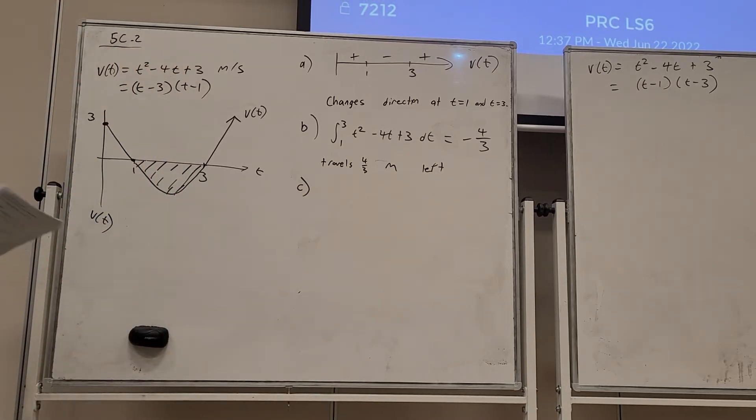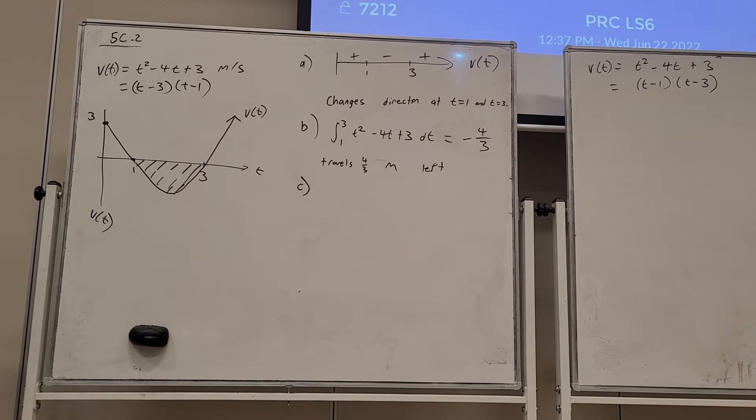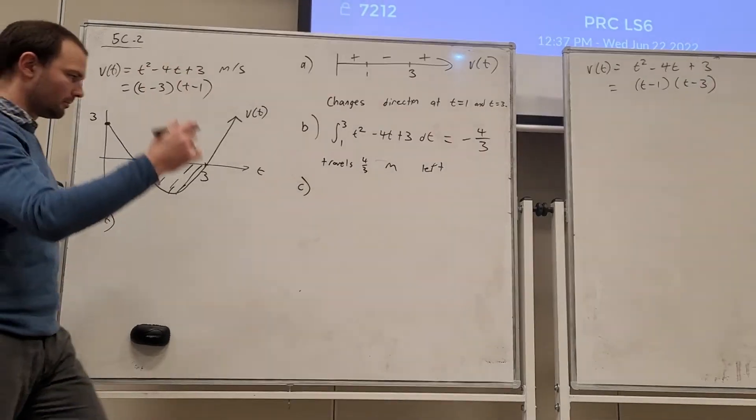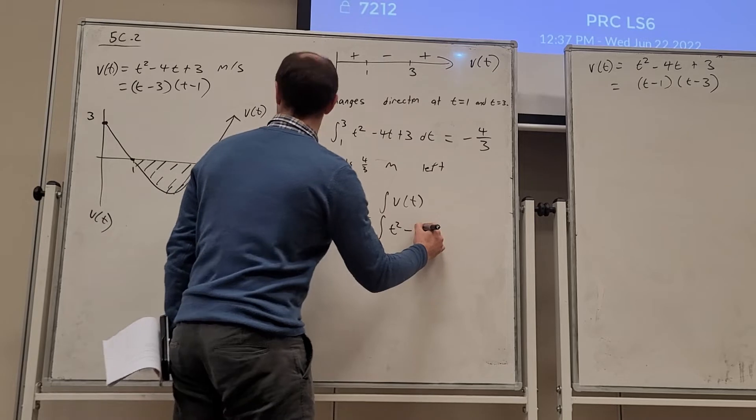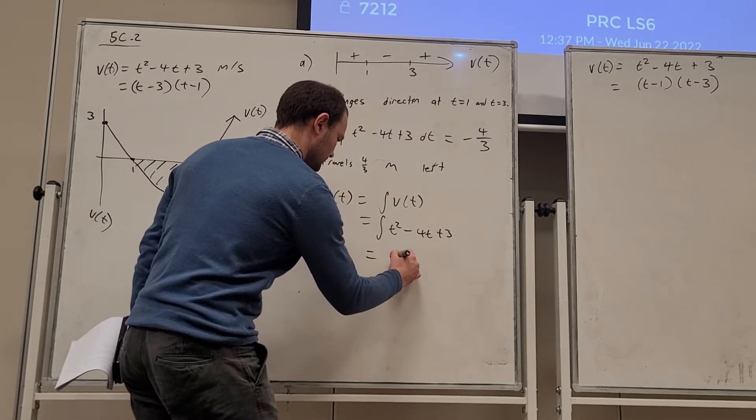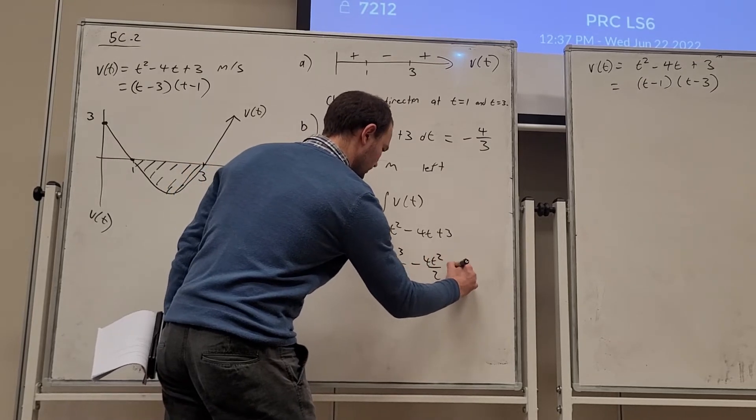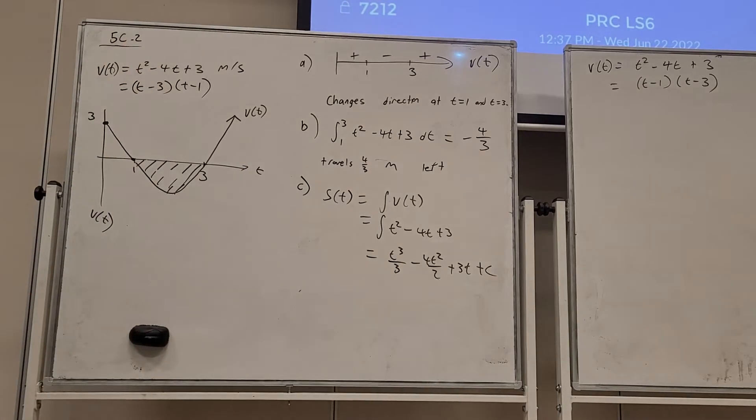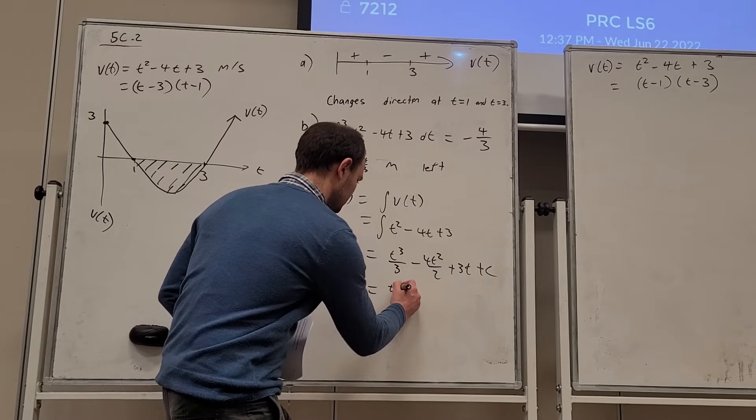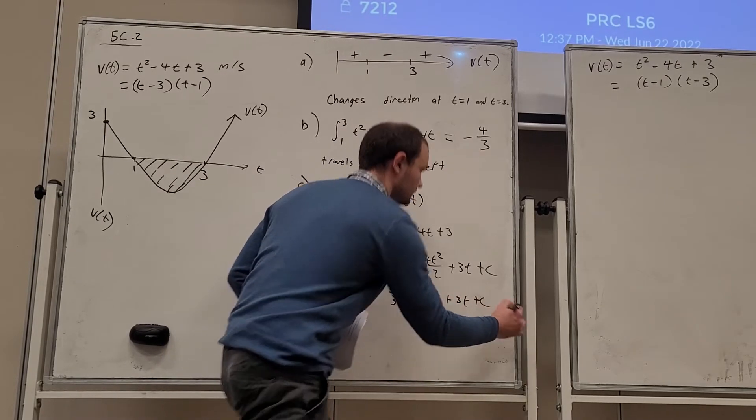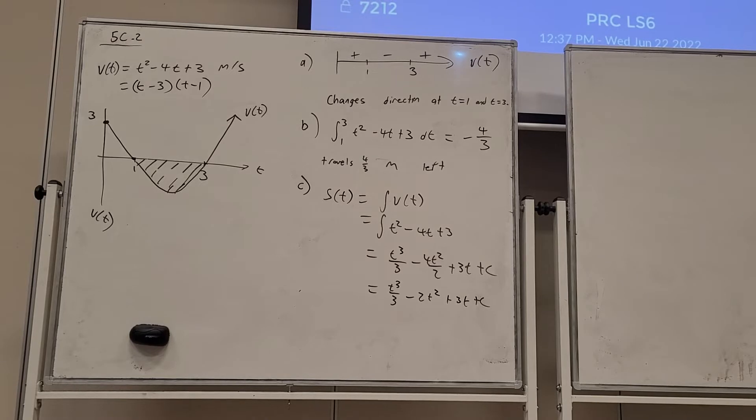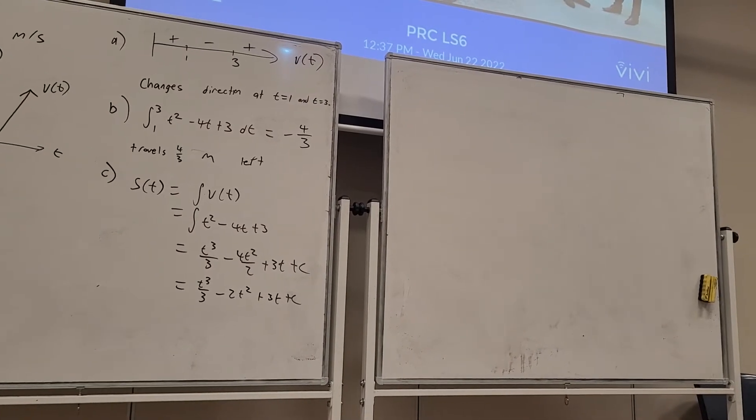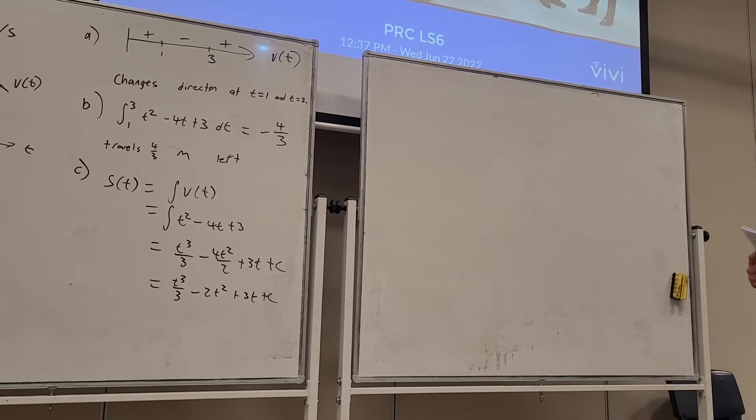Part C. Find S(t). So find the displacement function. Well, if this is the velocity function, the displacement function is going to be the integral of it. So let's form the integral. S(t) is going to be the integral of the velocity function. S(t), so that's t squared, take 4t plus 3. And we get t³/3, take 4t² on 2, plus 3t, plus C. And we can simplify a little bit.